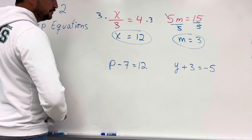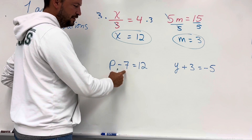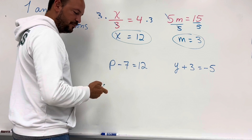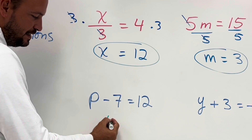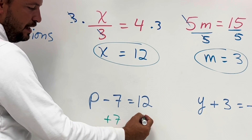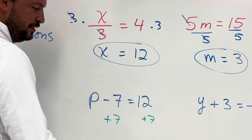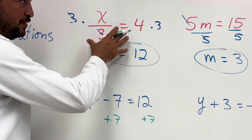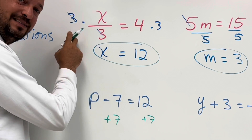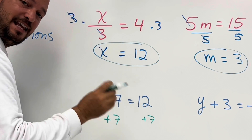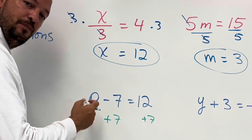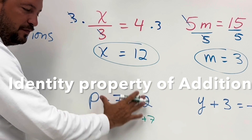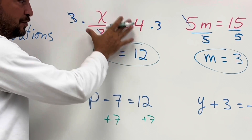Now, p minus 7. Here we have subtraction, so we need to apply the opposite operation — we're going to add 7 on both sides. That gives us 0 on the left side. Why do we need a 0? Because 0 plus a number is the same number, just as 1 times a number is the same number.